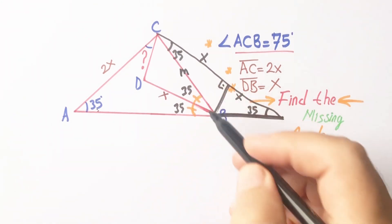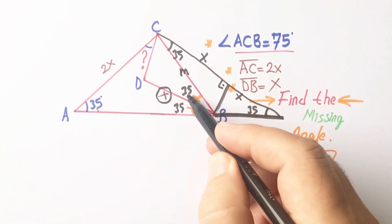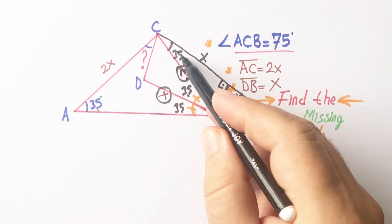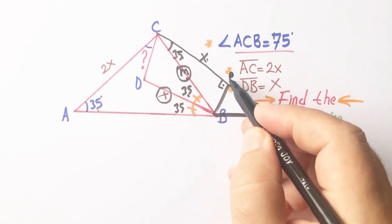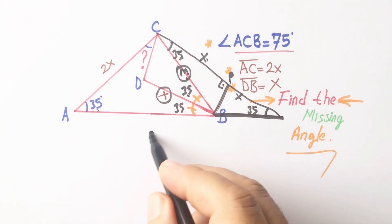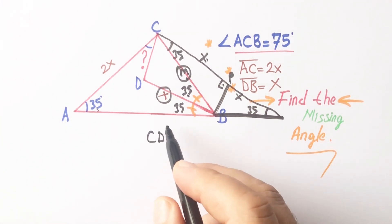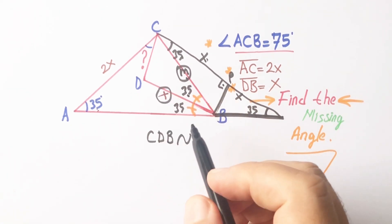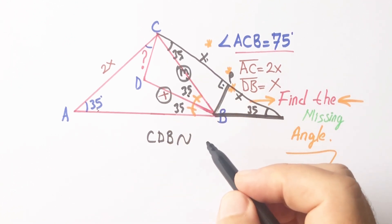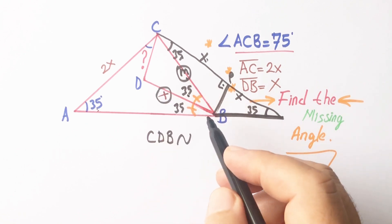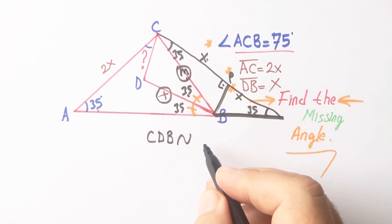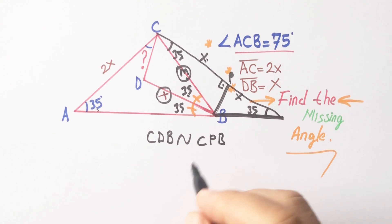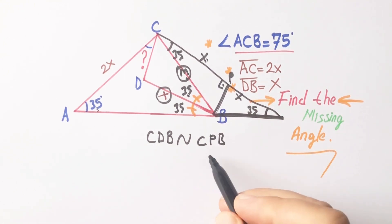If you notice that here is X, the angle is 35 degrees, and CB is a common length. Let's call the relevant lengths M. So we have triangle with M, X, and 35 degrees, and this triangle also M and X — that means these two triangles are congruent. Therefore triangle CDB and triangle CPB are congruent.